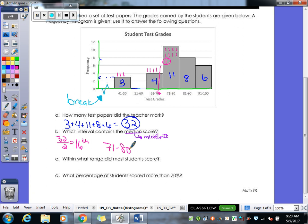Now it just also so happens that seventy-one to eighty would be our mode, but it does not always work out that way. So within which range did most students score? Seventy-one to eighty. That had eleven test papers in there so that's where most people scored.